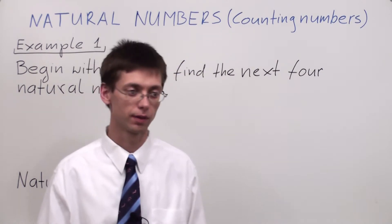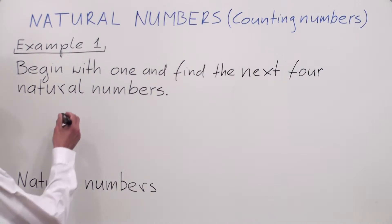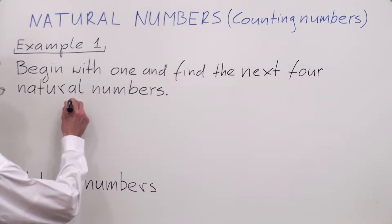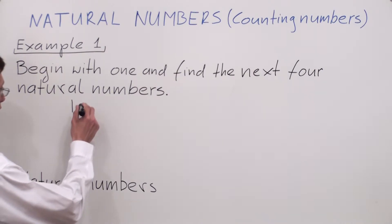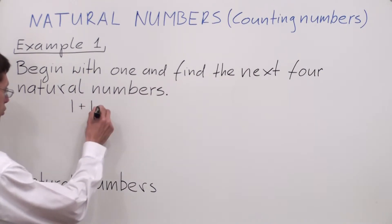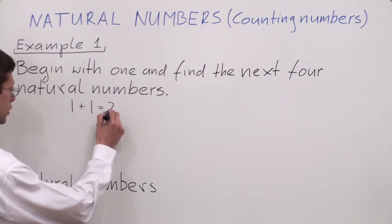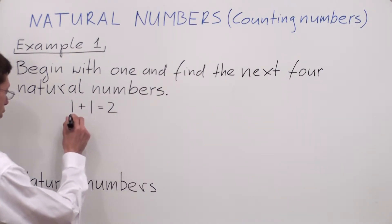For example, we have a problem which says: begin with 1 and find the next 4 natural numbers. As we said, any time we start counting, we start with the number 1. If I want to find the next larger natural number, I simply add 1 to my previous number. So 1 plus 1 is equal to 2, so my next natural number is 2.